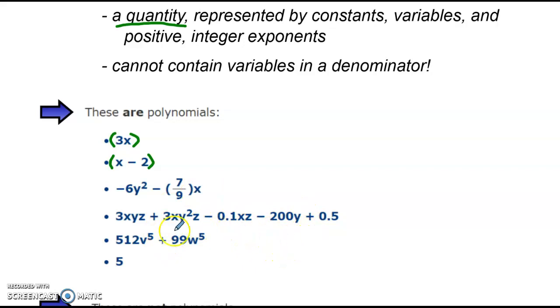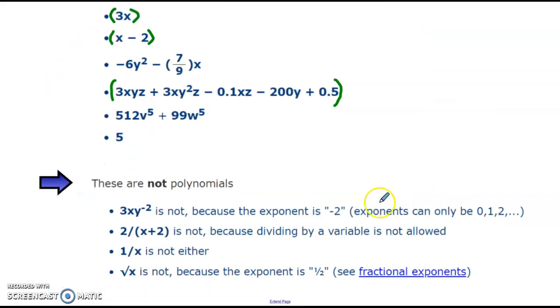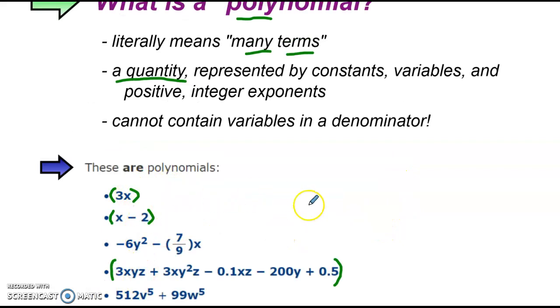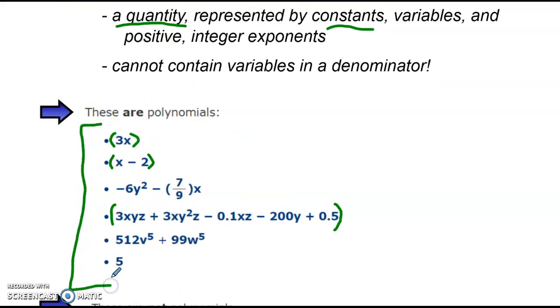Some of them are really complicated. This whole big expression here might look like it should be simplified, but it actually can't, and we'll learn why this week. So this technically is a single term, a single quantity, and it's called a polynomial. Now, one thing to consider is that polynomials cannot contain variables in a denominator. You cannot have something like 2 over x plus 2. Polynomials never have any variables in the denominator. But anything that's represented, any expression that includes constants, meaning just any numbers, variables, and positive integer exponents, are examples of polynomials.